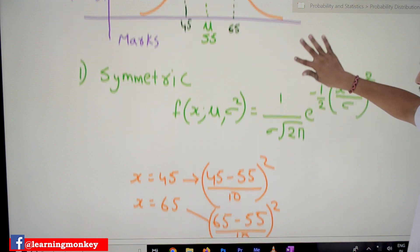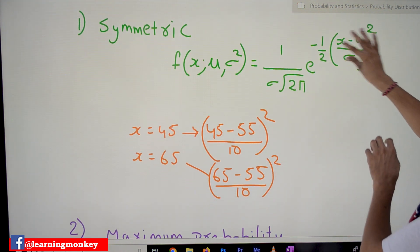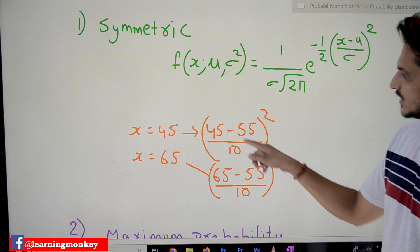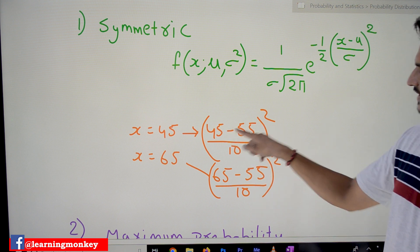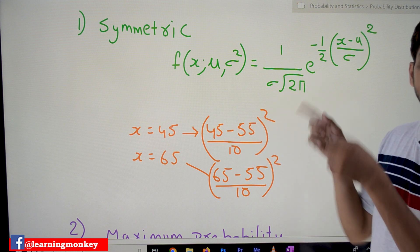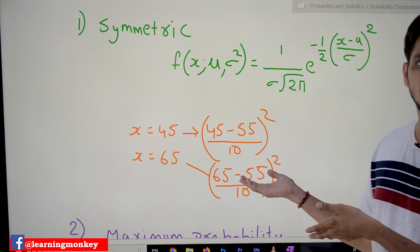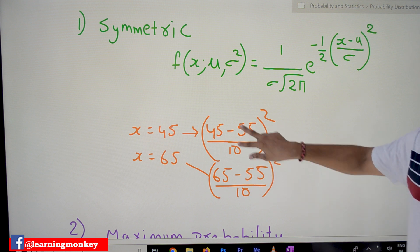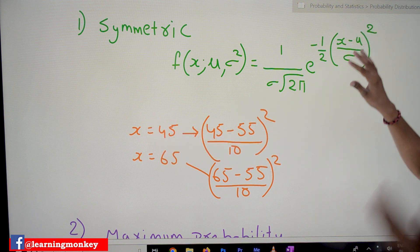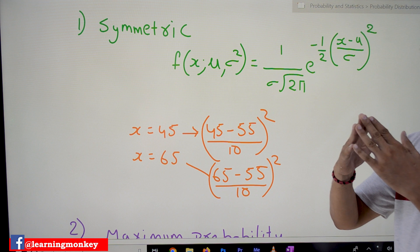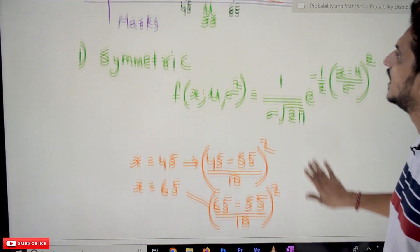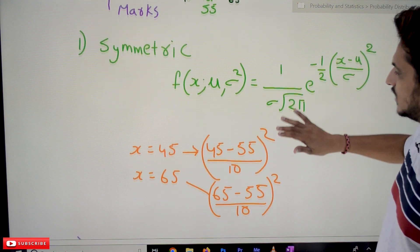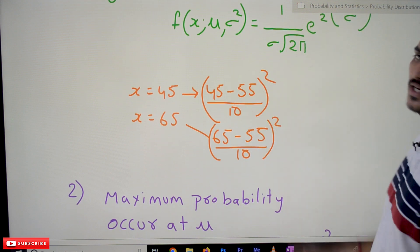So when we substitute x values into the PDF, the only term that changes is (x−μ)/σ squared. For x=45: (45−55)/10 = −1, squared = 1. For x=65: (65−55)/10 = 1, squared = 1. These two values are the same for both 45 and 65, which is why the probability density function produces a symmetric bell-shaped curve for the normal distribution. That is the property we showed graphically in our previous class, now confirmed with the PDF.